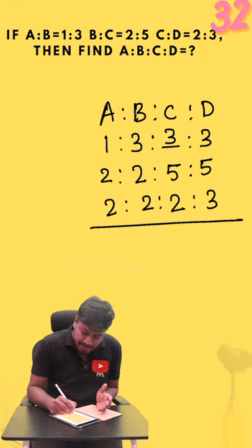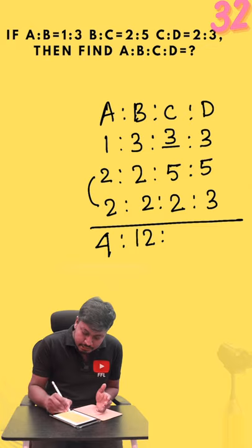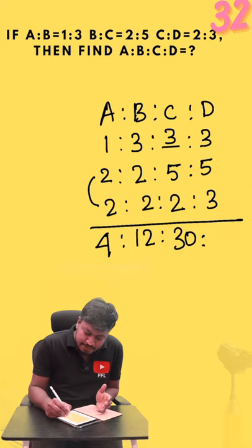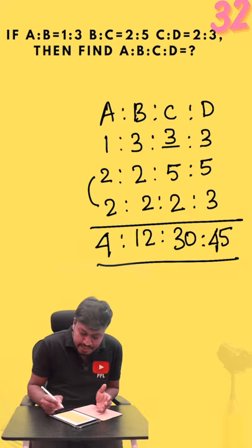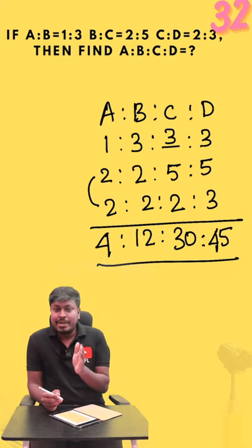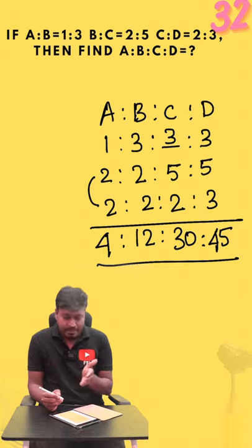Now start multiplying all the numbers. 2 into 2 will be 4. 6 into 2 will be 12. 15 into 2 will be 30. 5 into 3 is 15. 15 into 3 is 45. So finally we can say that 4:12:30:45 will be the ratio.